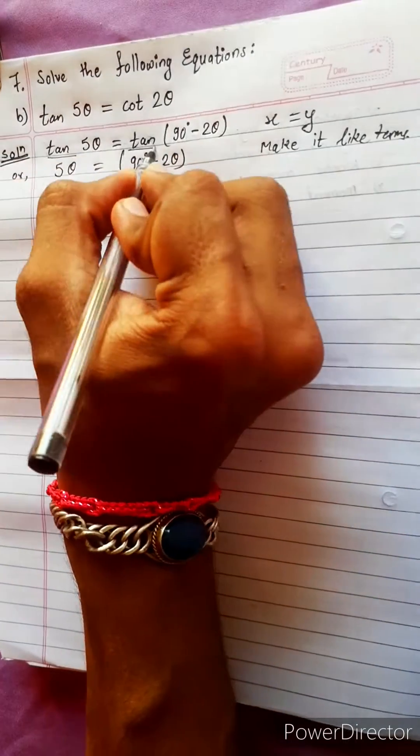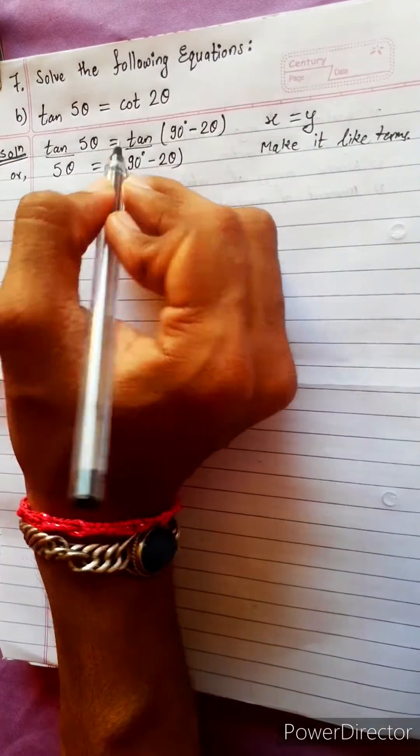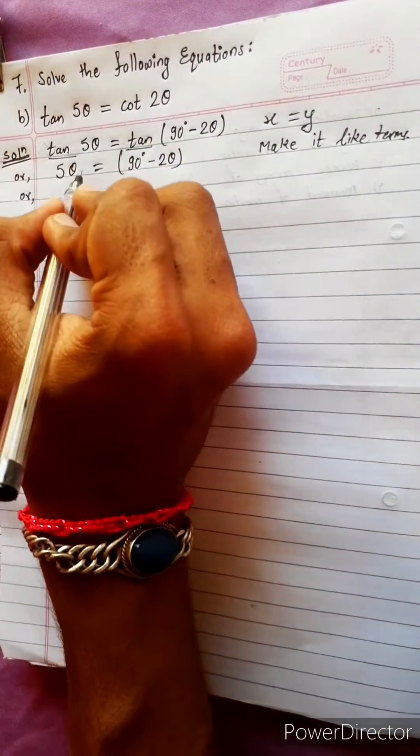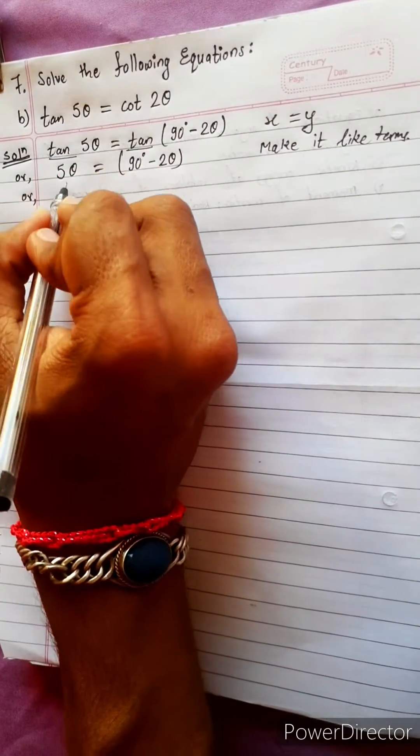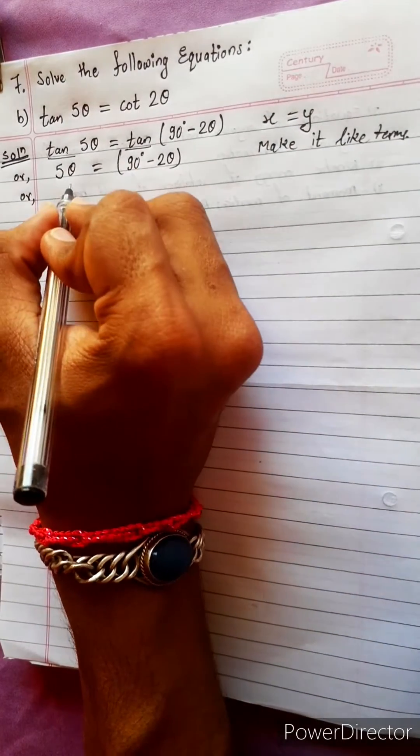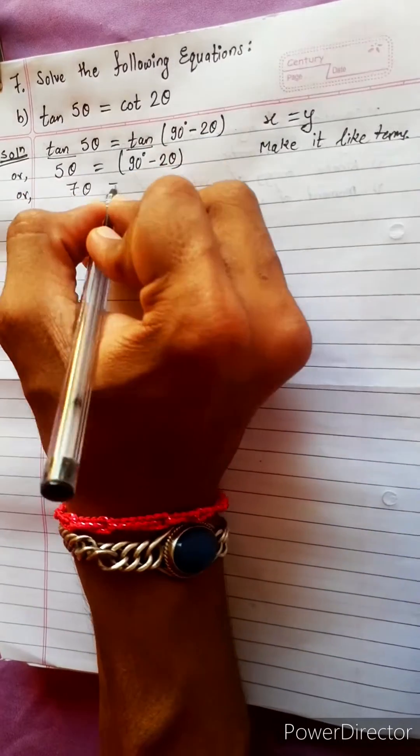If ratio cancels, you can do this. Send 2θ to the other side. 2 plus 5 is 7. 7θ equals to 90 degree.